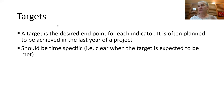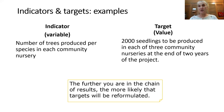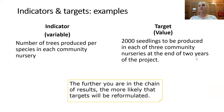Talking about targets: we've taken the baseline, now we're going to the target for a given indicator. The target is the desired endpoint for each indicator, often planned to be achieved in the last year of a project. It should be time-specific — it should be clear when you expect to achieve it. An indicator is a variable and a target is a specific final value you're trying to achieve. For example, the variable would be 'the number of trees produced per species in each community nursery,' and a target would be '2,000 species to be achieved in each of three community nurseries at the end of two years of a project.' The further along the value chain you get — from output to outcomes to impact — the more likely you'll need to make a judgment and reformulate those targets as you move along.